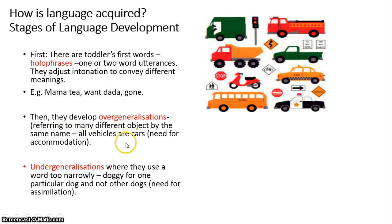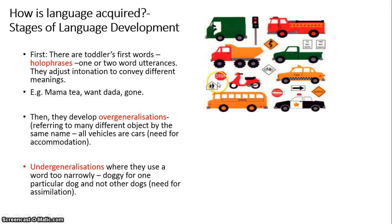There can also be overgeneralization, where the child refers to an object that looks similar to one they know and calls all similar objects by the same name. For example, a child might identify an entire group of vehicles as 'cars.' Traveling on the road, they may see a motorbike and call it a car, a dump truck — a car, a school bus — a car, a fire engine — a car, a police car — a car. At this point, they are overgeneralizing because they think any vehicle that moves and makes a sound like a car and is on the road is also a car.